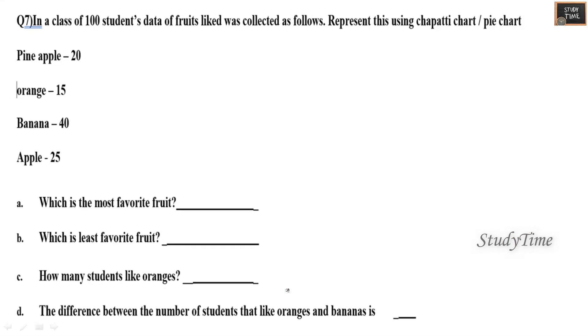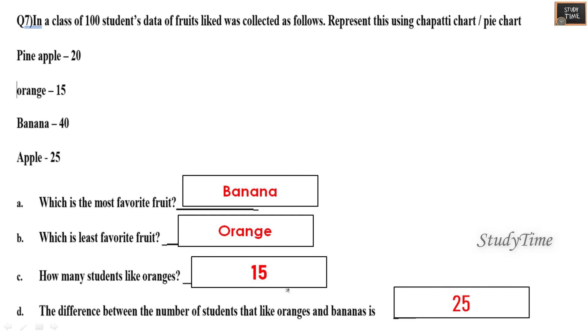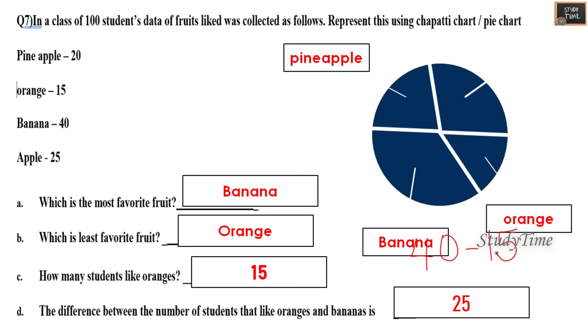Next, in a class of 100 students, data of fruits liked was collected as follows. Represent this using pie chart. Pineapple 20, Orange 15, Banana 40, Apple 25. Which is the most favorite fruit? Here it is Banana. Which is the least favorite fruit? It is Orange. How many students like oranges? It is 15. Difference between the number of students that like oranges and bananas is 40 minus 15, that is 25. So this is the pie chart for this: Pineapple, Banana, Orange, and Apple here.